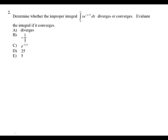This one was strange — we had to do L'Hôpital's rule, a tabular method, and then an improper integral. We know we're going to use tabular because it involves sine, cosine, or e. We use integration by parts. Let's go ahead and work the tabular piece.